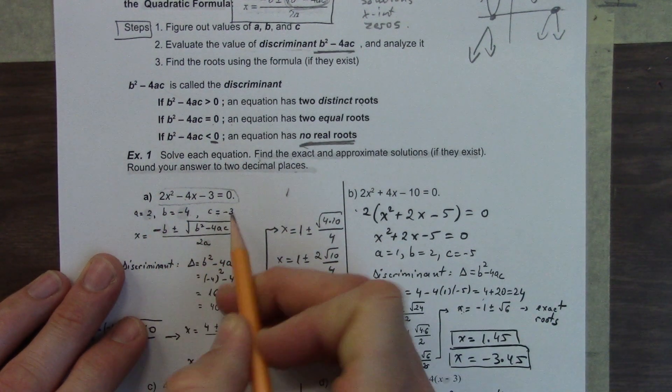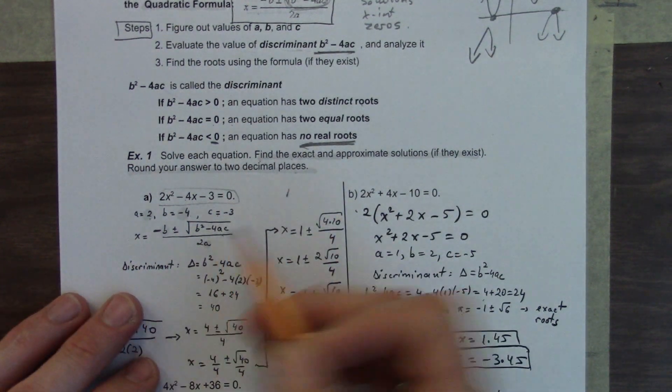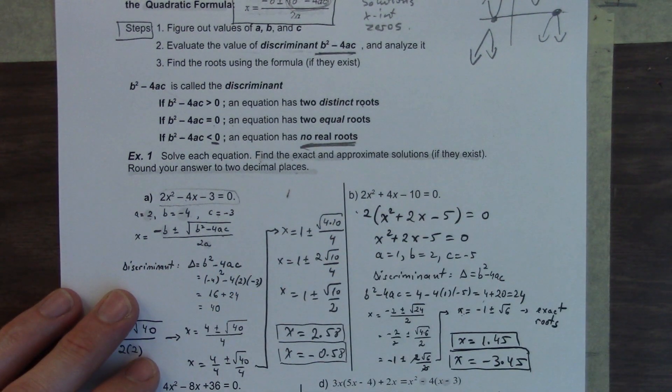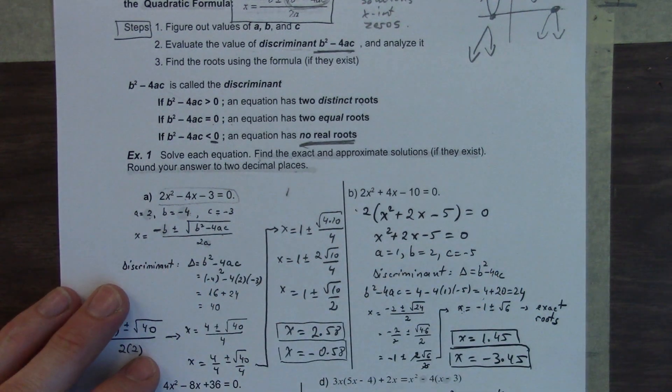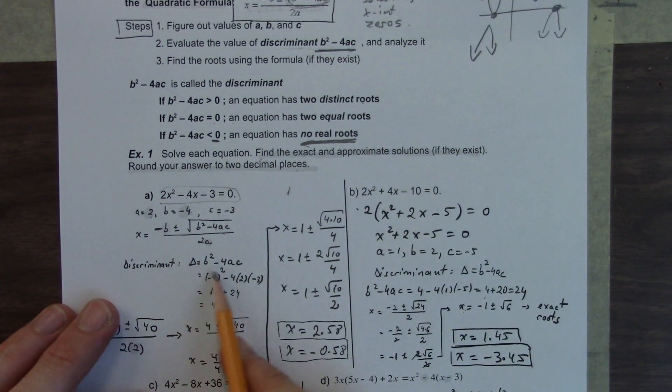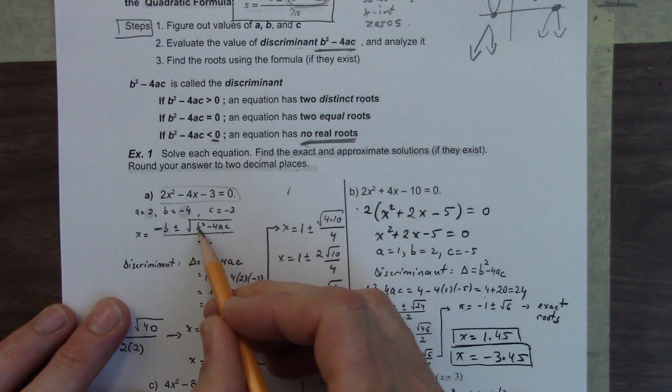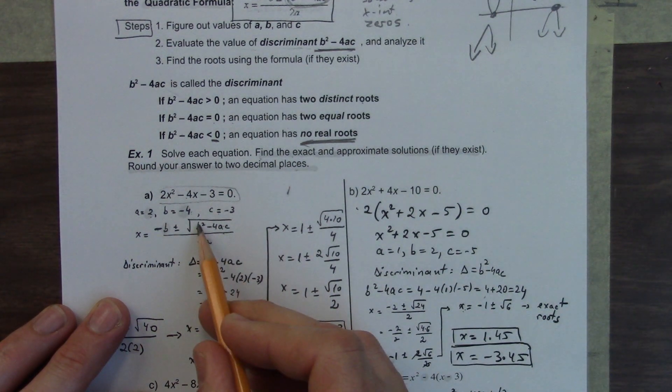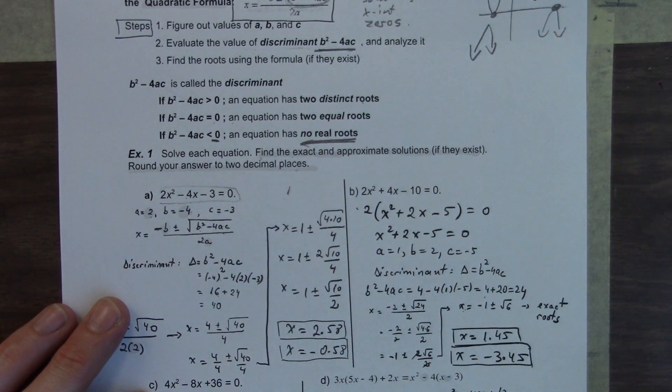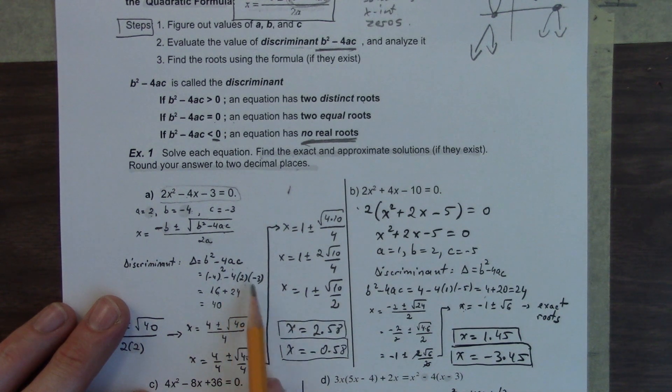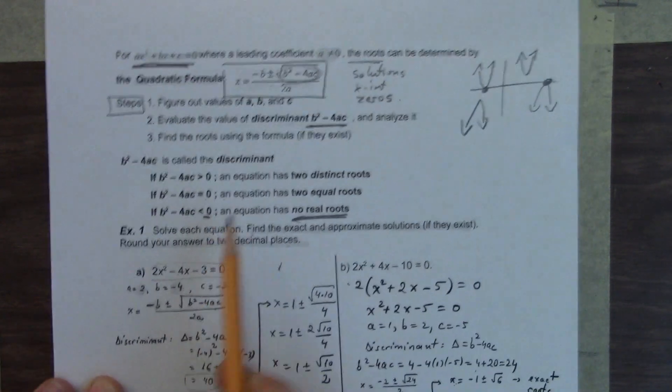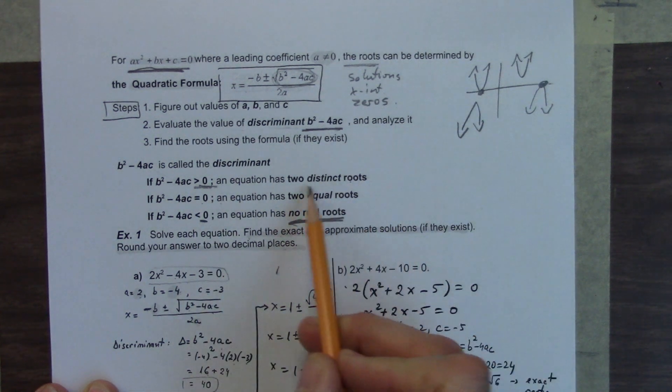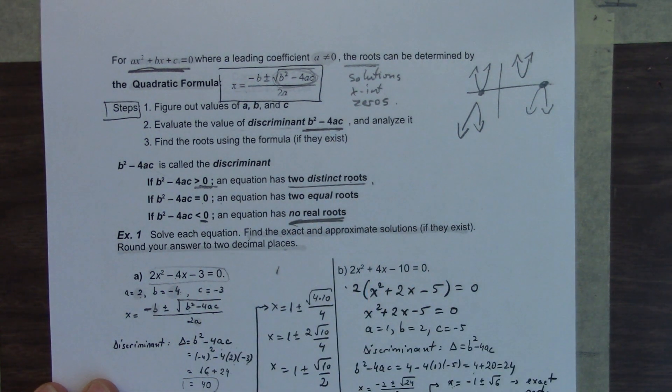So that's all we need. We have those values now. We have to plug them in to the quadratic formula. b gets plugged in. Negative 4 becomes positive 4 because it's negative b. So we have, first, to check the discriminant: b squared minus 4ac. So we're going to plug negative 4 in for b. We're going to get negative 4 squared is 16. We're going to plug in a and c, 2 and negative 3. We're going to end up with 16 plus 24 is 40.